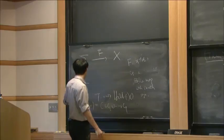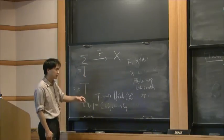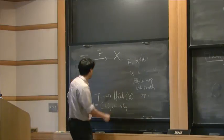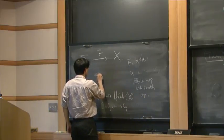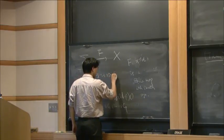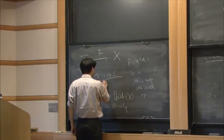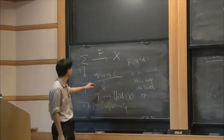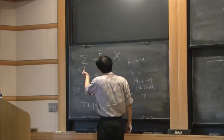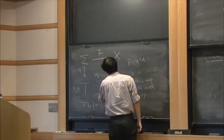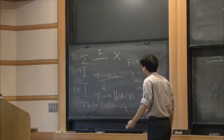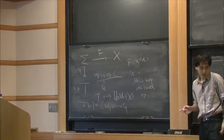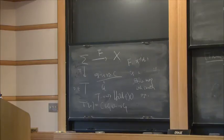The special point of this family is our comb, and the general point is smooth and isomorphic to C. The general point is just our Cₜ, isomorphic to C, and there is a map taking Cₜ to X. This is still an embedding, and this is a smoothing of the original map.